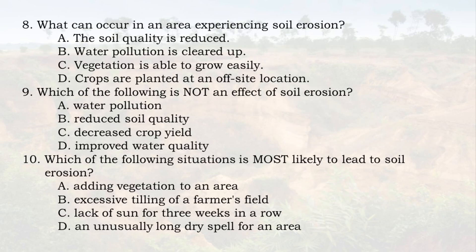8. What can occur in an area experiencing soil erosion? A. The soil quality is reduced. B. Water pollution is cleared up. C. Vegetation is able to grow easily. D. Crops are planted at an off-site location.